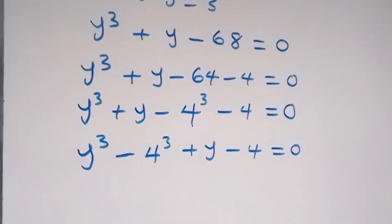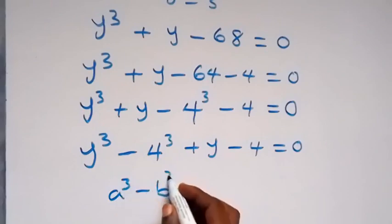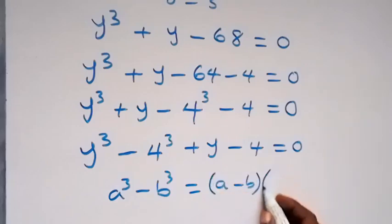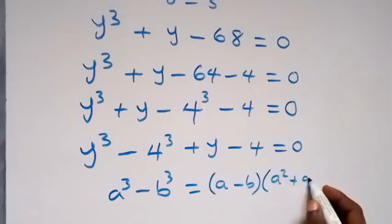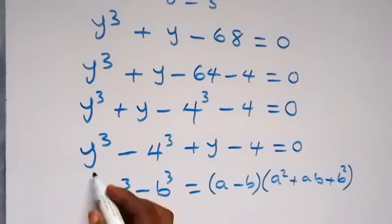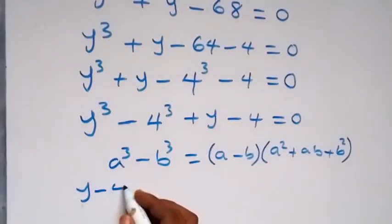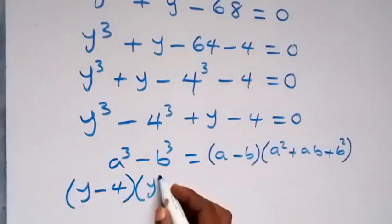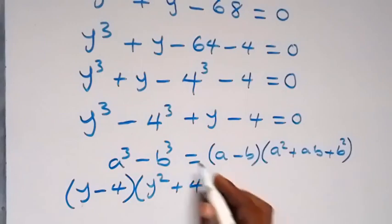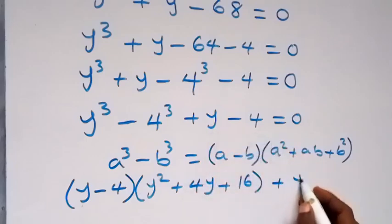Then we have difference of two cubes here: a cubed minus b cubed equals a minus b multiplied by a squared plus ab plus b squared. Let's write this in that format. This becomes y minus 4 into bracket: y squared plus y times 4, that's 4y, then plus 4 squared, that's 16. Then we now have plus y minus 4 here.